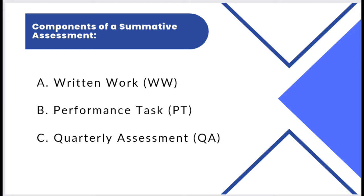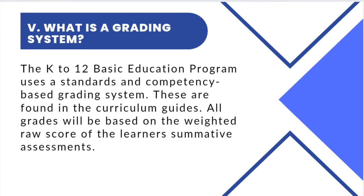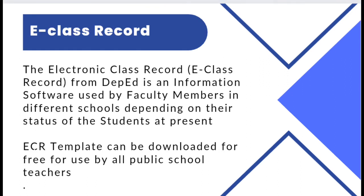What is the grading system? The K-12 basic education program uses a standards and competency-based grading system, found in the curriculum guides. All grades will be based on the weighted raw score of the learner's summative assessments. The minimum grade needed to pass a specific learning area is 60, which is transmitted to 75 in the report card. The lowest mark that can appear on the report card is 60 for quarterly grades and final grades. The electronic class record from DepEd is an information software used by faculty members in different schools. The EZR template can be downloaded for free for use by all public school teachers.